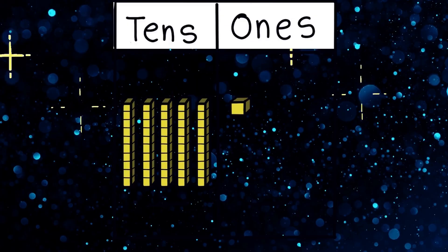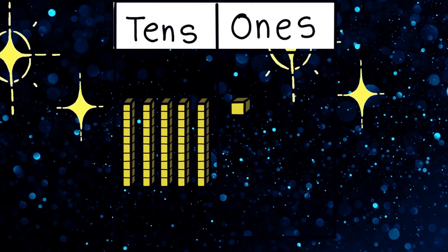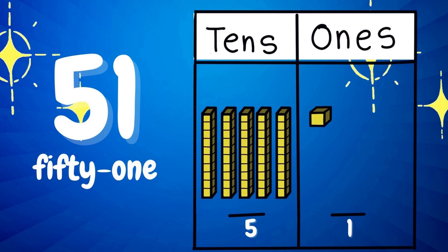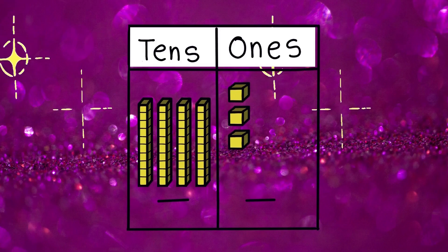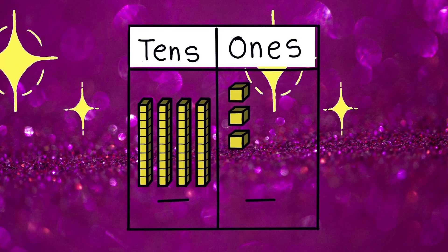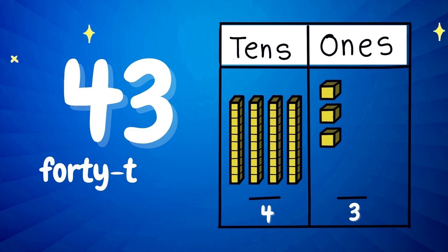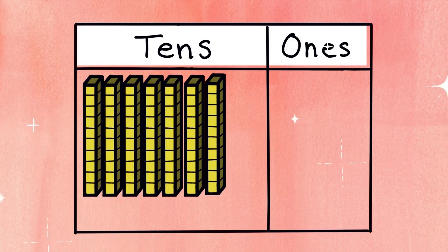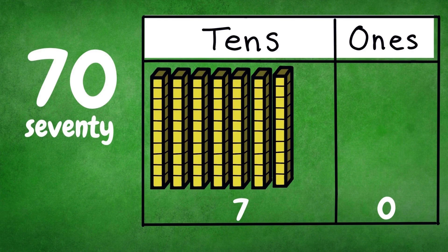Next number. It has two digits: 5 tenths and 1 one. Did you guess right? 51. Next number. It has two digits: 4 tenths and 3 ones. Did you guess right? Number 43. Good job. Next number. It has two digits: 7 tenths and 0 ones. It is number 70. Good job.